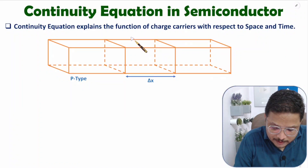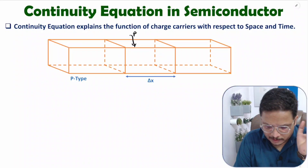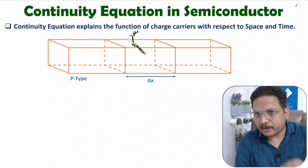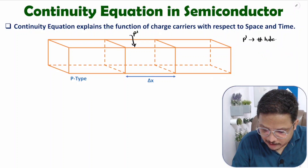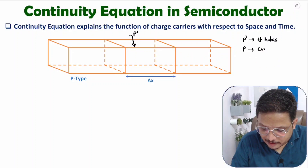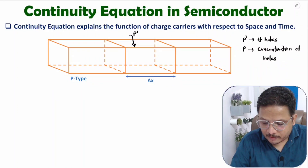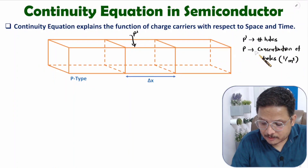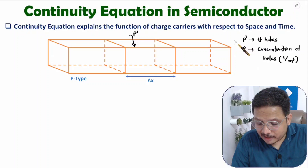Let me clarify one basic thing. p' (p-dash) denotes the number of holes, while p denotes the concentration of holes — number of holes per unit volume. So p' is just a number, whereas p is number per unit volume. I'll first derive the equation based on p' and then convert that equation to be based on p, which is concentration of holes per unit volume.